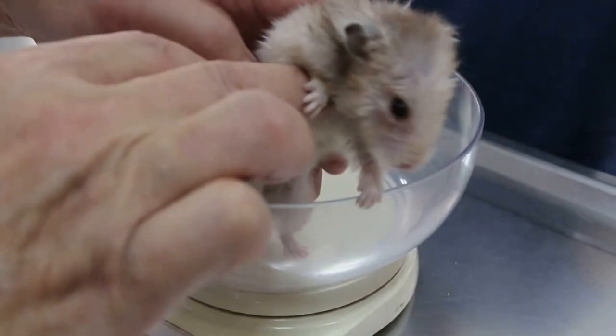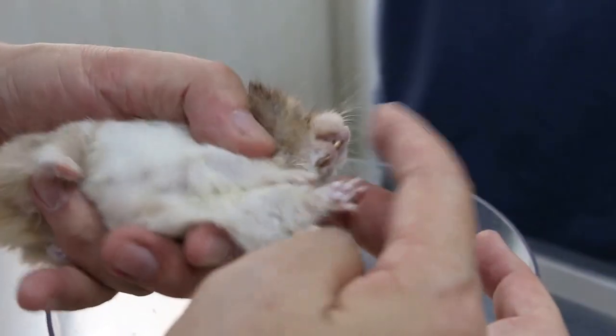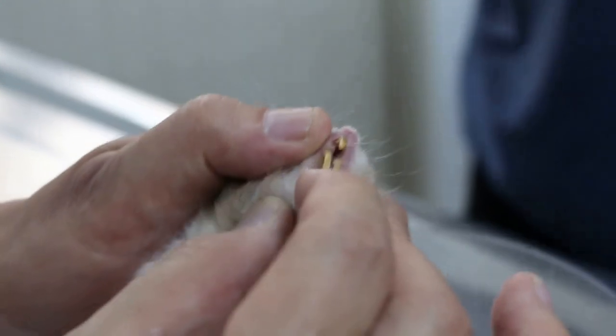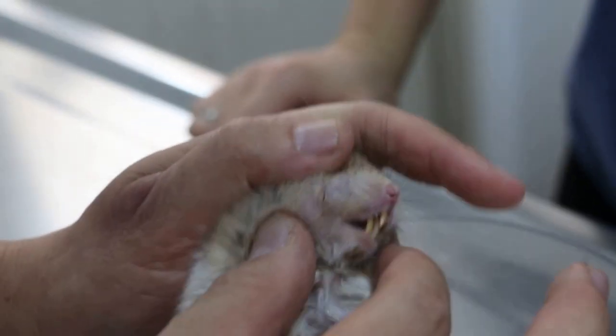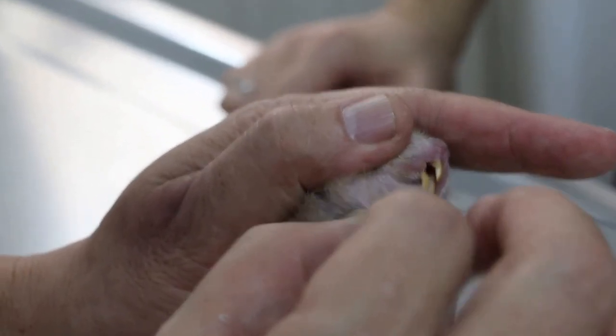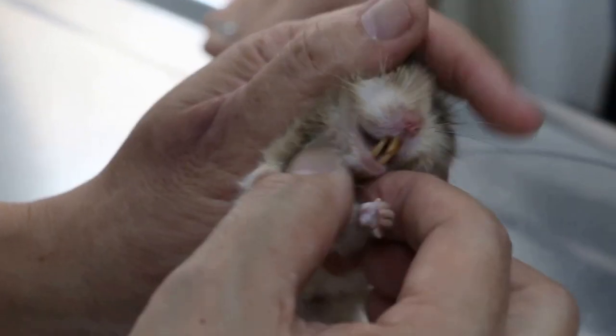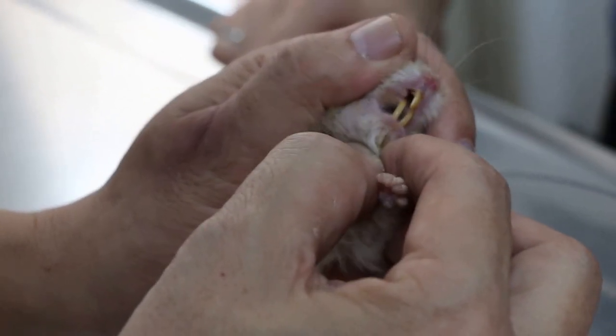What happened to the teeth? The teeth are broken, so after that she cannot eat anymore. This is considered overgrown teeth - they're overgrown, poking the roof of the mouth, so she cannot eat because it's very difficult.